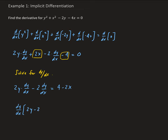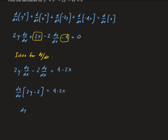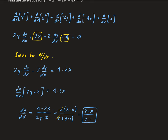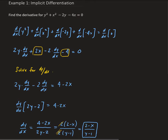So we have dy/dx times (2y minus 2) equals 4 minus 2x. We divide both sides by (2y minus 2) to solve for dy/dx, then simplify by factoring out 2 from the numerator and denominator: 2 times (2 minus x) divided by 2 times (y minus 1). The 2s cancel, giving us (2 minus x) divided by (y minus 1). That is the derivative of our implicit expression.